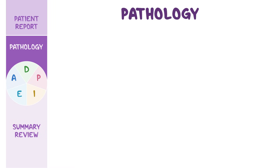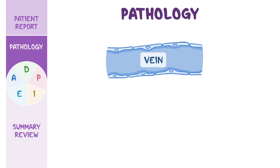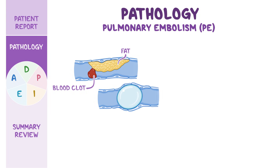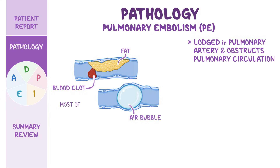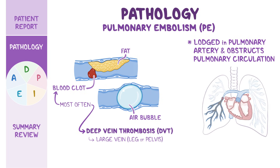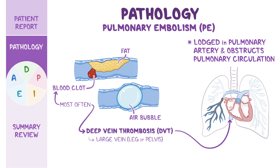Venous thromboembolism, or VTE, refers to a clot that starts in a vein. Specifically, a pulmonary embolism, or PE, occurs when an embolus — which is a small mass that could be a blood clot, fat, or even an air bubble — becomes lodged in the pulmonary artery and obstructs the pulmonary circulation. Most often, the embolus is a blood clot associated with deep vein thrombosis, or DVT, which is when a clot forms in a large vein, usually in the leg or pelvis. The clot can break off and travel up the inferior vena cava to the right atrium, into the right ventricle, and finally into the pulmonary artery, causing decreased blood flow to the lung tissue and impaired oxygenation.